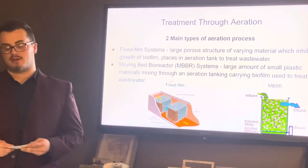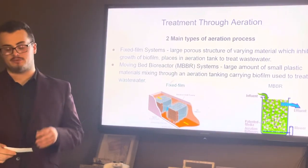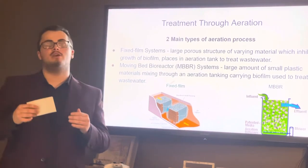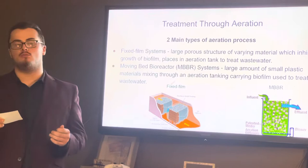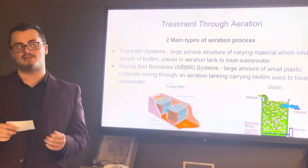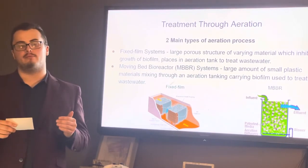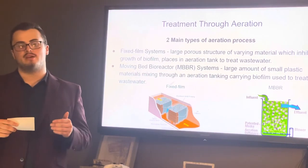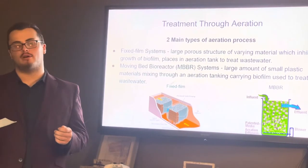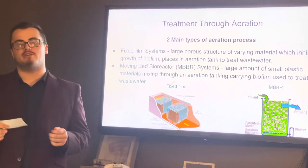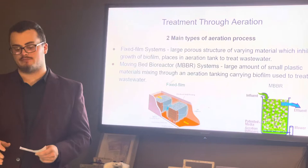Sensorex.com defines two main types of aeration processes. The first being fixed film systems, which are comprised of a large coarse material made of ceramic, wood, or plastic that allows the growth of microorganisms that help to clean the contaminants from water. The porous material allows water to pass through and make contact with these microorganisms.